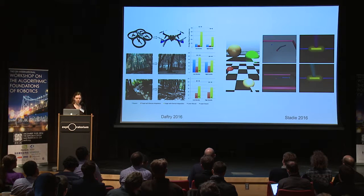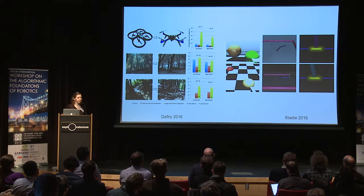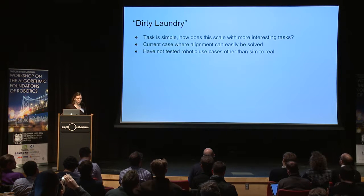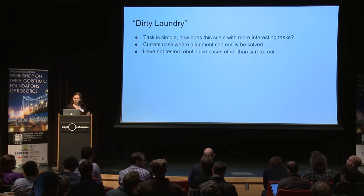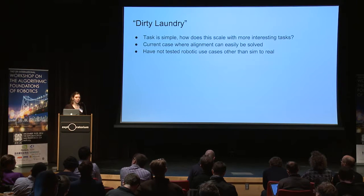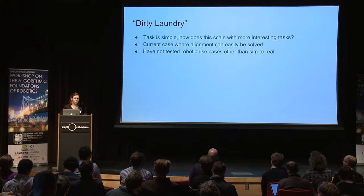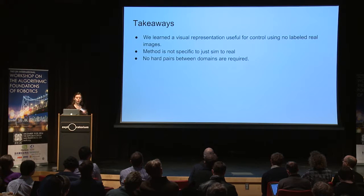Concurrent work using similar methods includes transferring a quadcopter flight policy between different forests or weather conditions, and a recent iCLR submission adapting between different viewpoints for visual policies. Some limitations: the task is fairly simple and we're wondering how this scales to more complex tasks. Currently the pairing is easy to solve because there's only one object; with multiple objects the number of possible pairings grows polynomially. We have only tested this for simulation-to-real transfer, but it could apply to other domain adaptation problems. Our takeaway is that we can learn a good visual representation without labeled real images and without any hard pairs.